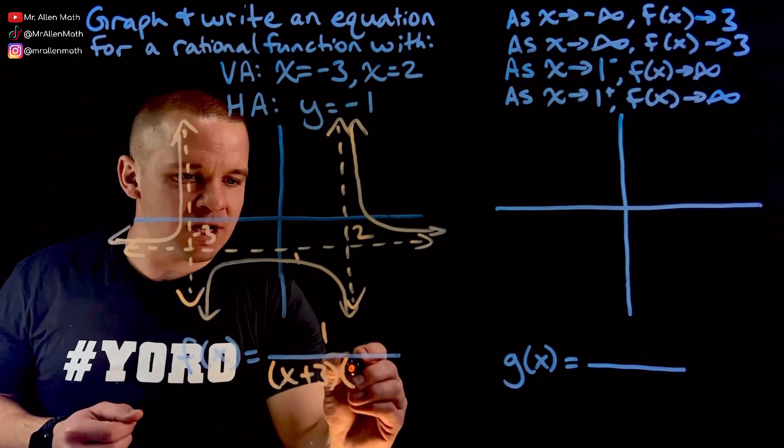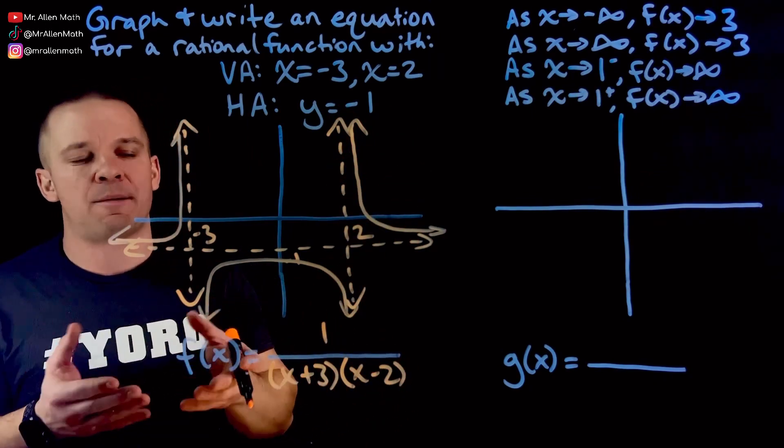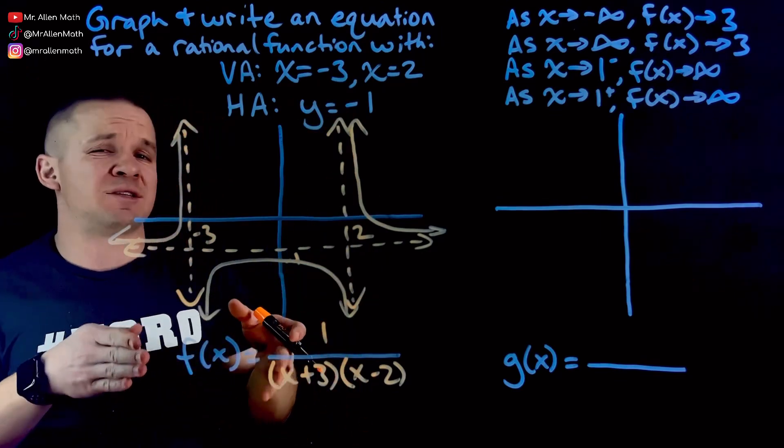And then we've got ourselves x minus two. So that when I plug in two, same thing occurred, zero in the denominator. No bueno. That's where we have the vertical asymptotes. The graph does not exist there.